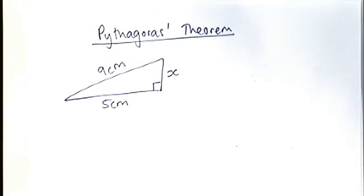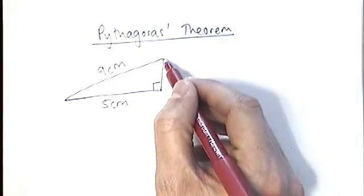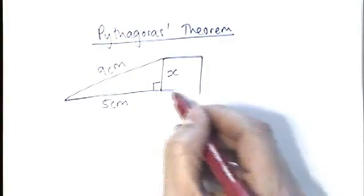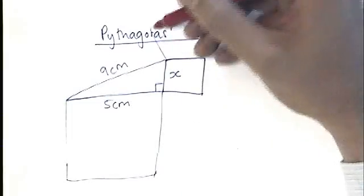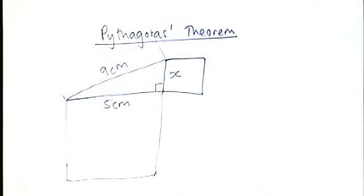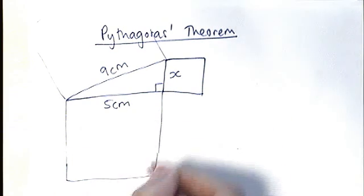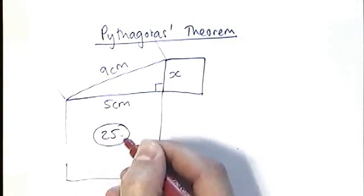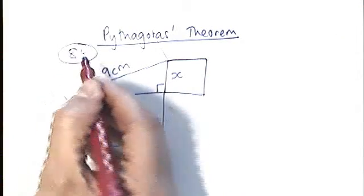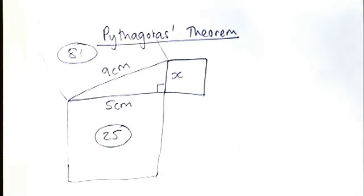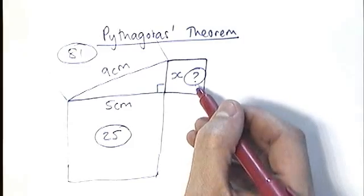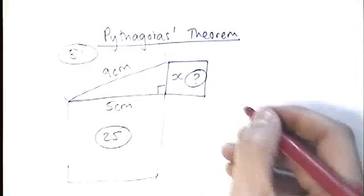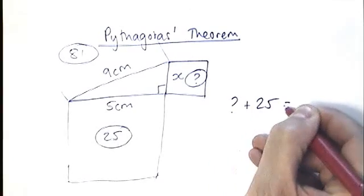Starting with Pythagoras' theorem in its most basic form — Pythagoras said that if we draw a square on each of the two shorter sides, the area of those two squares is going to add up to make the area of the big square on the longest side. The area of the square on the side of length 5 is 25, and the area of the square on the side of length 9 is 81. So we're looking for an area which together with 25 adds up to make 81.